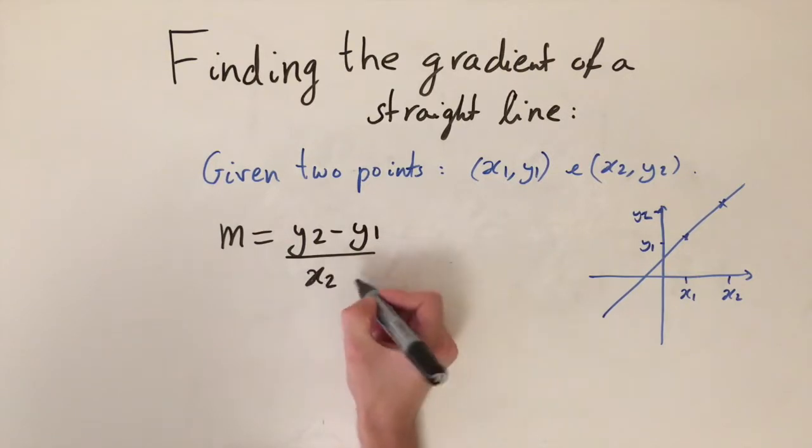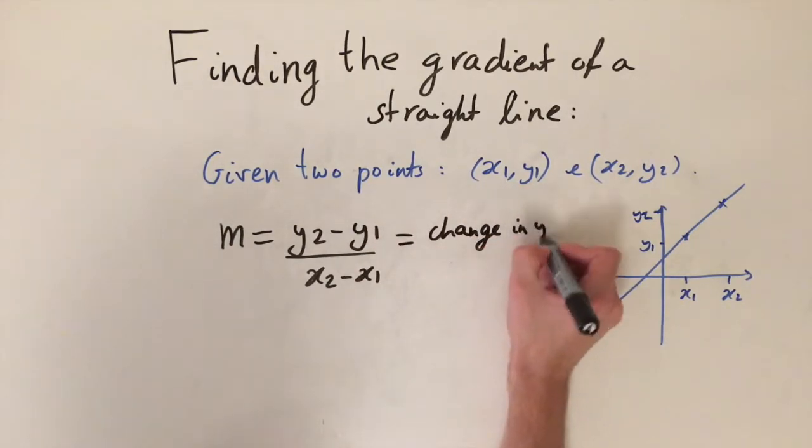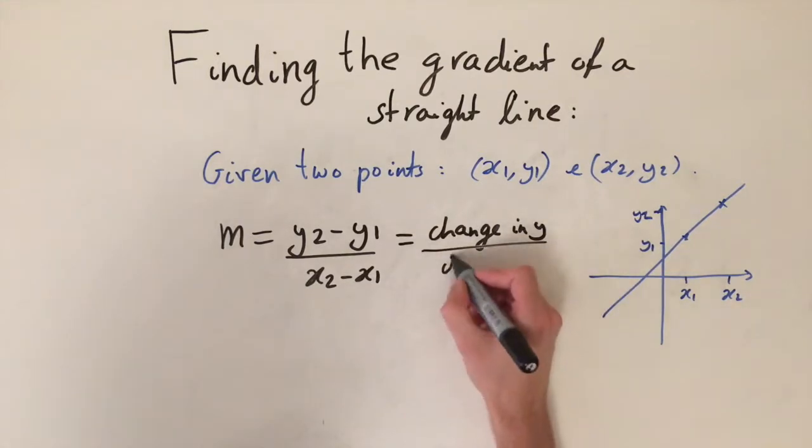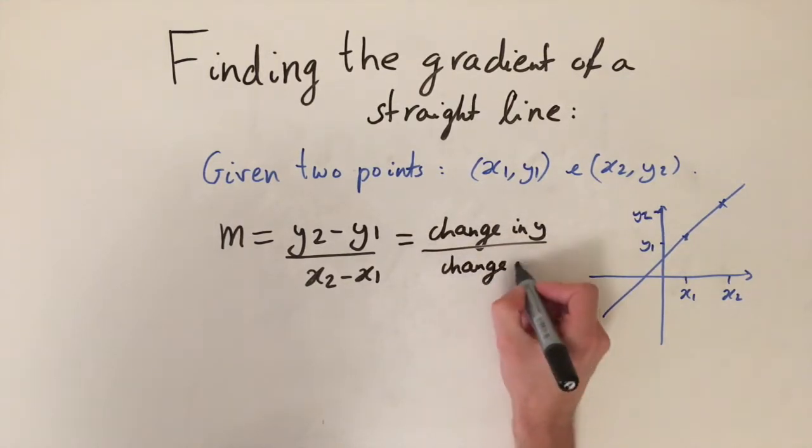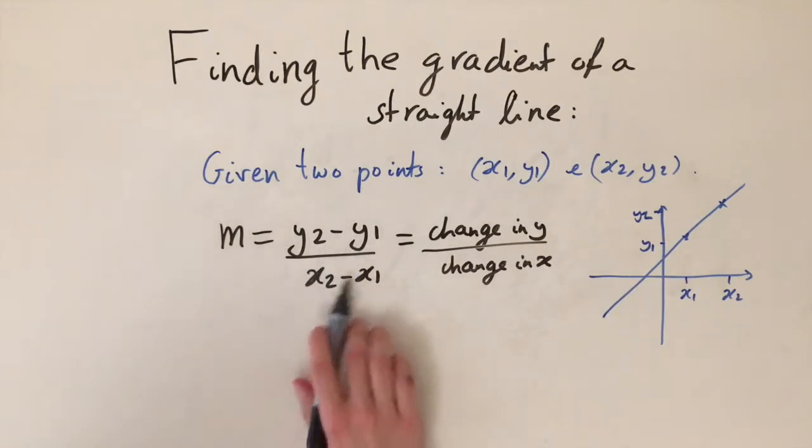Another way you can think about this is the gradient is the change in y divided by the change in x. So we take the two y coordinates, we subtract them, and we divide that by the difference of the x coordinates.